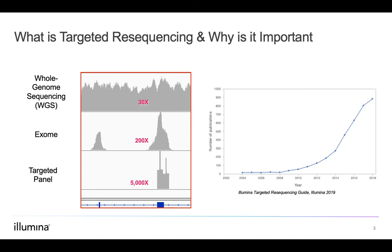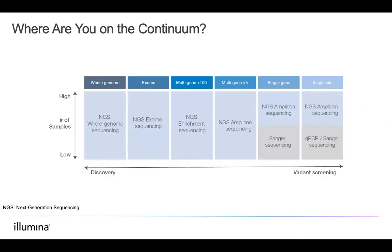With the declining cost of sequencing overall and improvements in targeted resequencing methods, targeted resequencing is accelerating the pace of research and driving high-impact publications. From 2004 to 2018, the number of publications with targeted resequencing has grown from a handful of studies to over 800 publications. Whole genome sequencing offers the highest level of discovery power but also the highest cost per sample. Targeted resequencing offers a cost-effective and scalable solution while still maintaining the purpose of the assay, whether that be discovery with exome sequencing or variant screening in a small subset of genes.